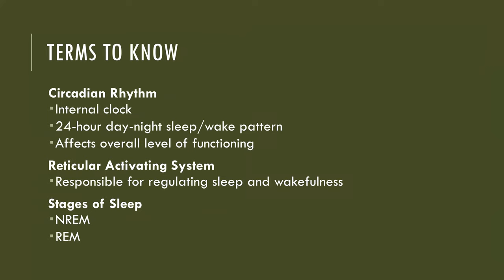Terms to know: circadian rhythm. This is a biorhythm based on the day-night pattern in a 24-hour cycle. The term comes from the Latin words 'circa,' meaning about, and 'dies,' meaning day or once a day. A person's circadian rhythm is regulated by the cluster of cells in the hypothalamus, which is located in the brainstem. It responds to changing levels of light — the amount of light that enters your eyes essentially tells your body what time it is. That's an important positive influence on your sleep and rest cycle.